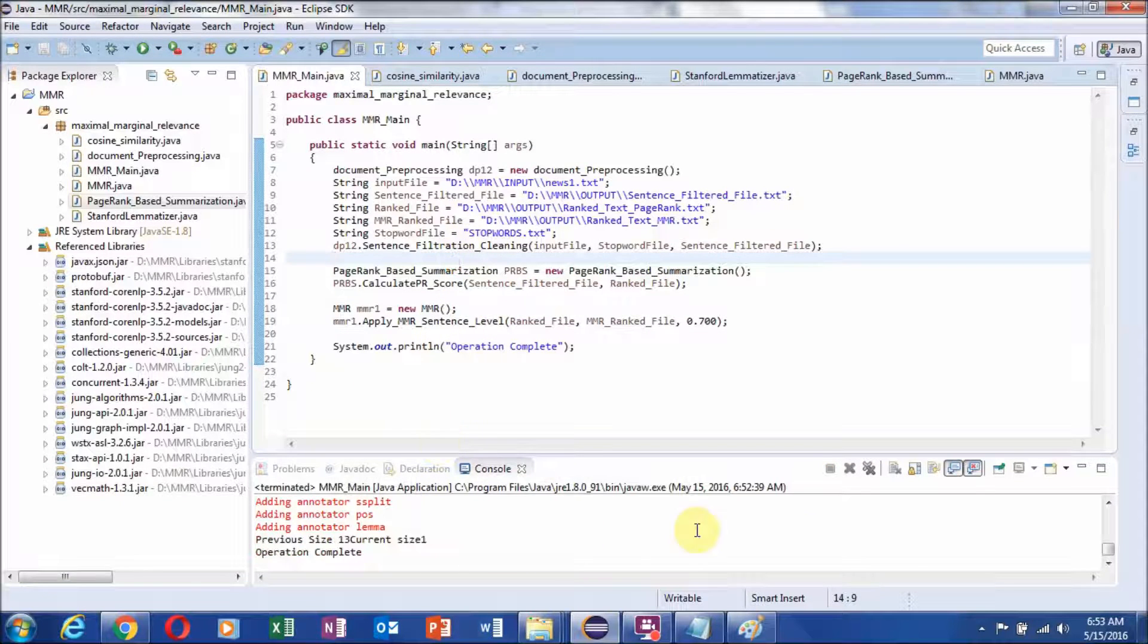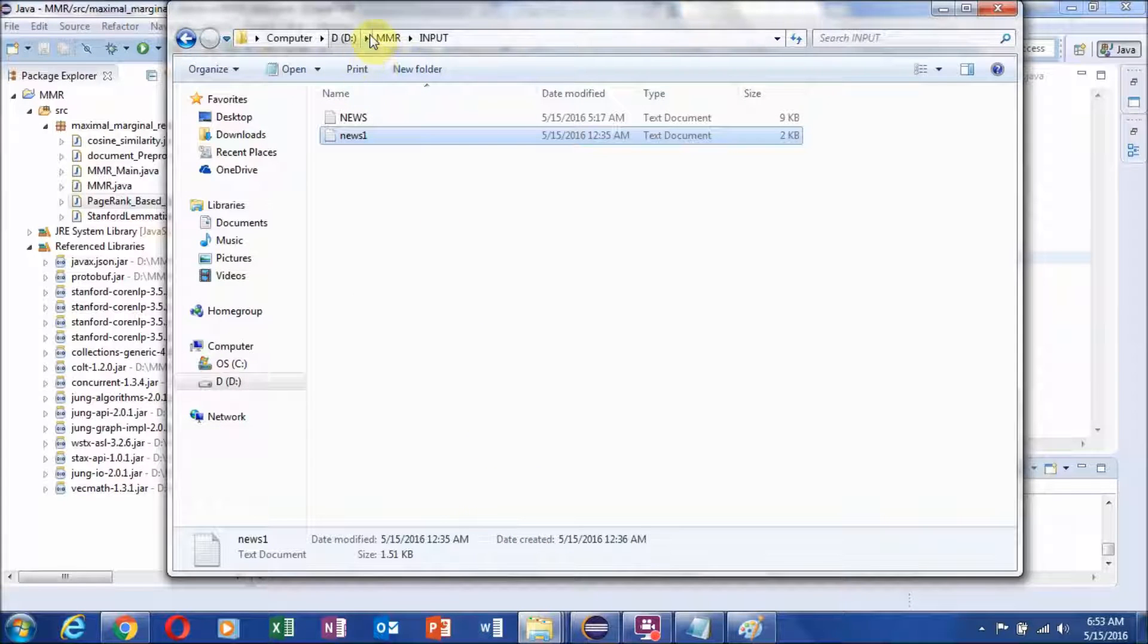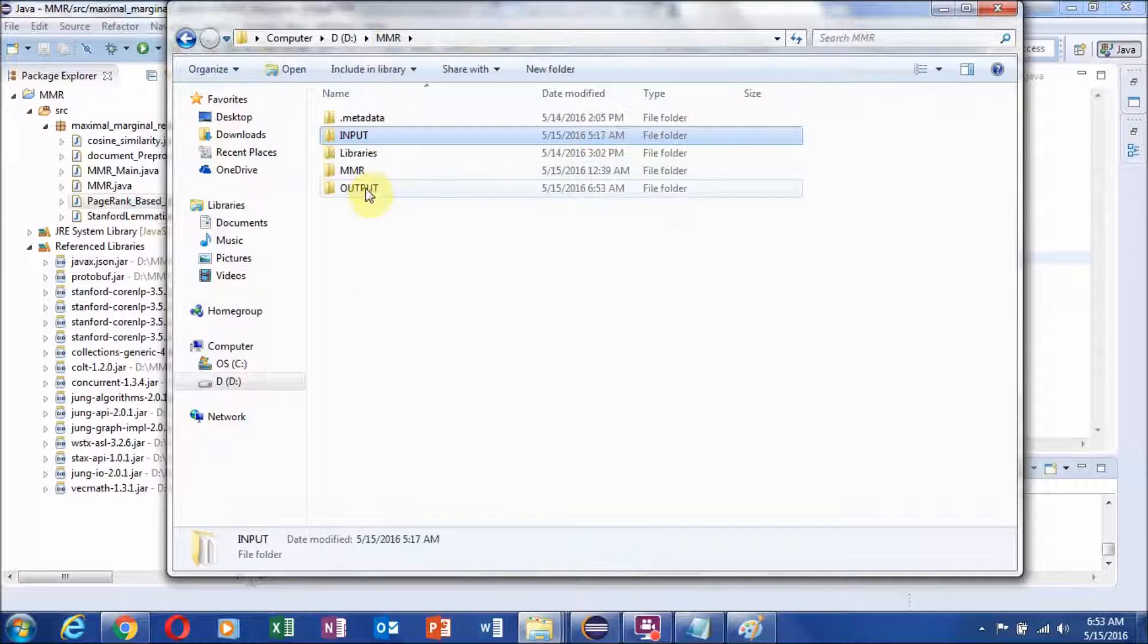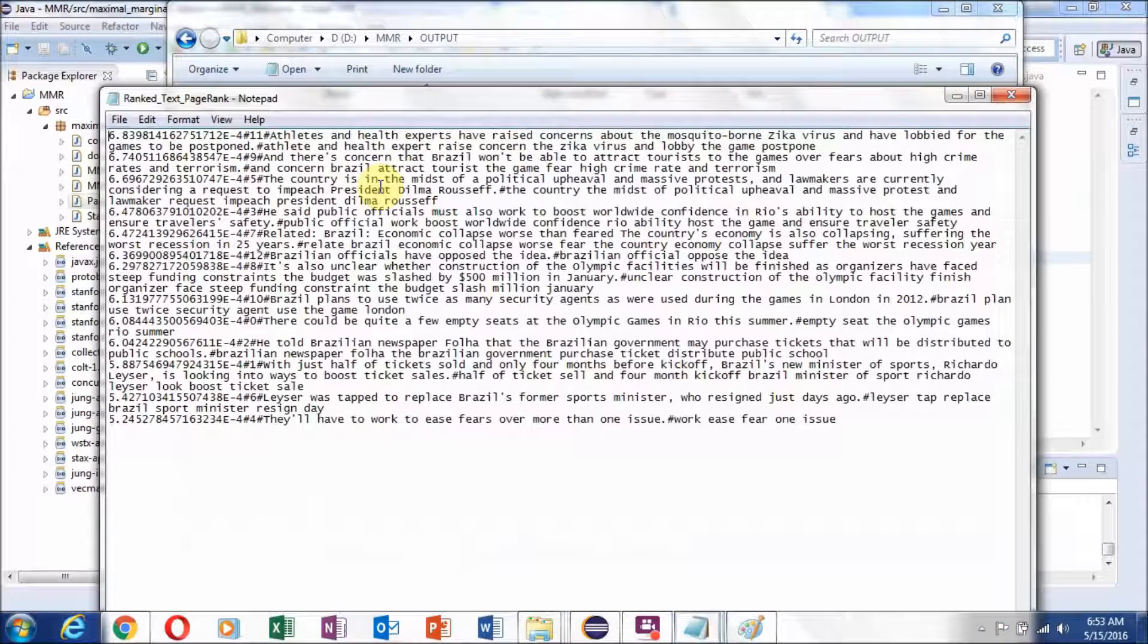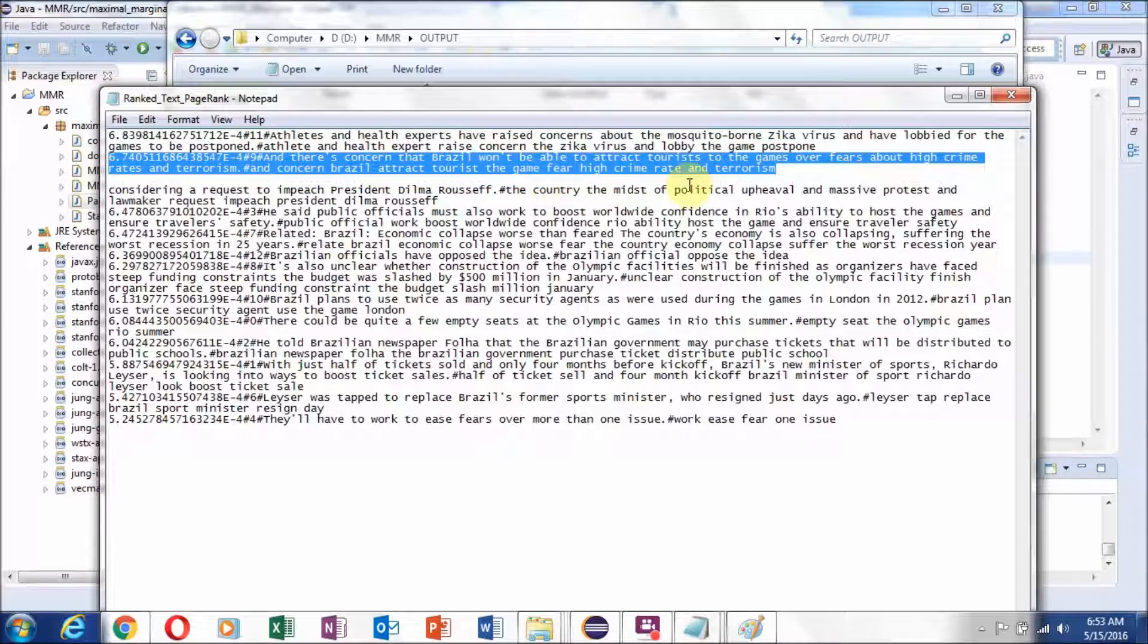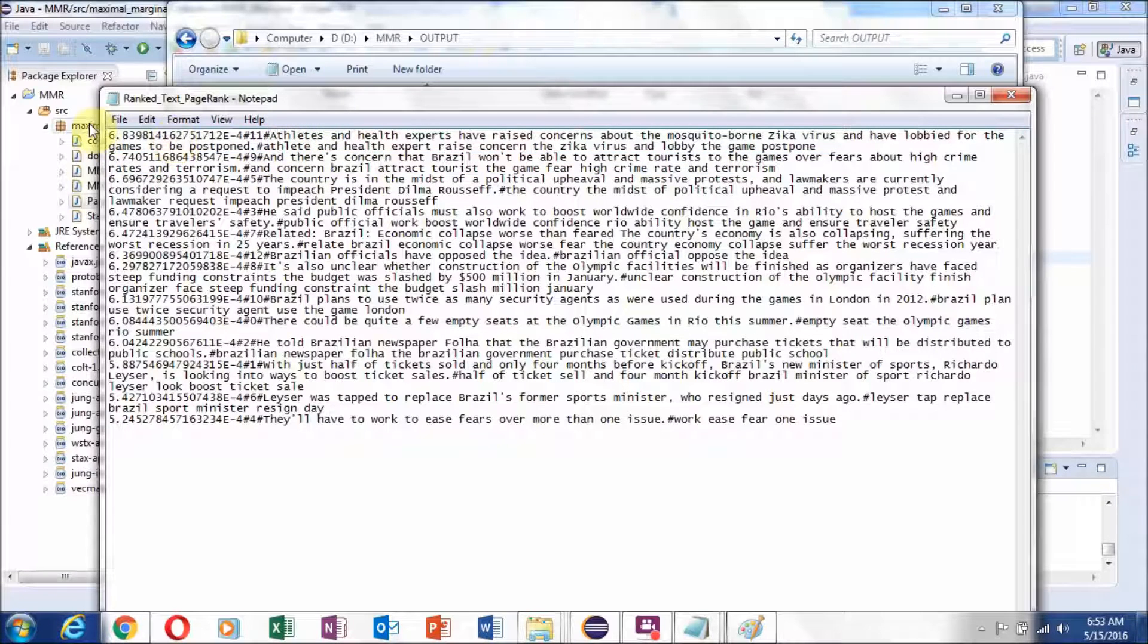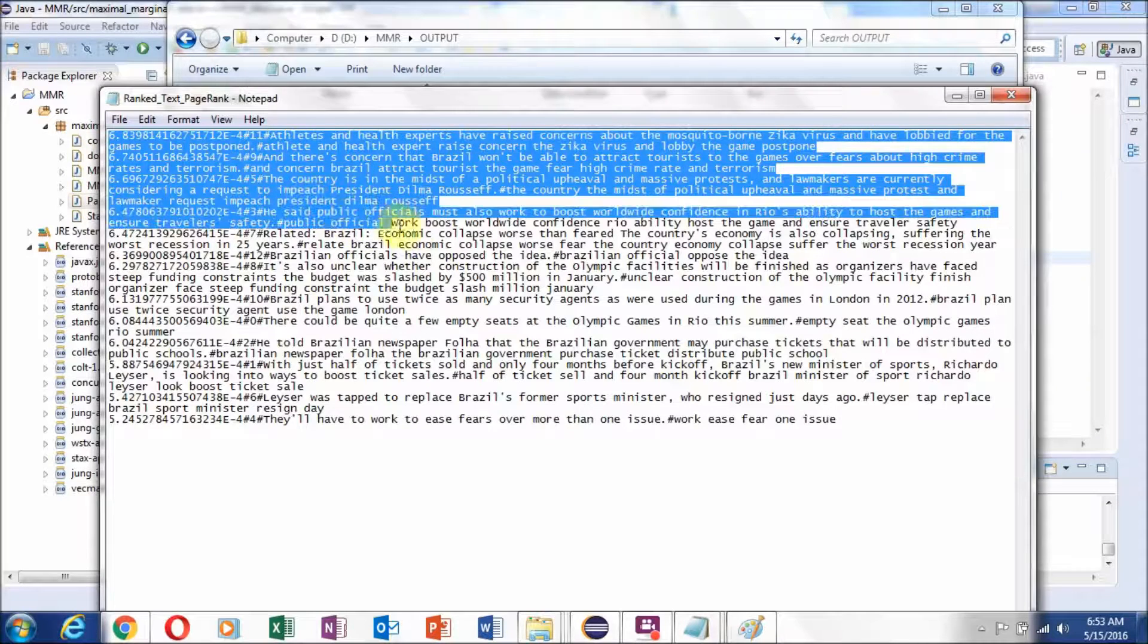So now we will see the system contains total 13 sentences. Now we can see the output. This is the PageRank based ranking. This is the highest ranked sentences based on PageRank. This is the second highest ranked sentence. But if you consider top four or five sentences, then you will find that there are a lot of information overlap in the simple traditional ranking.